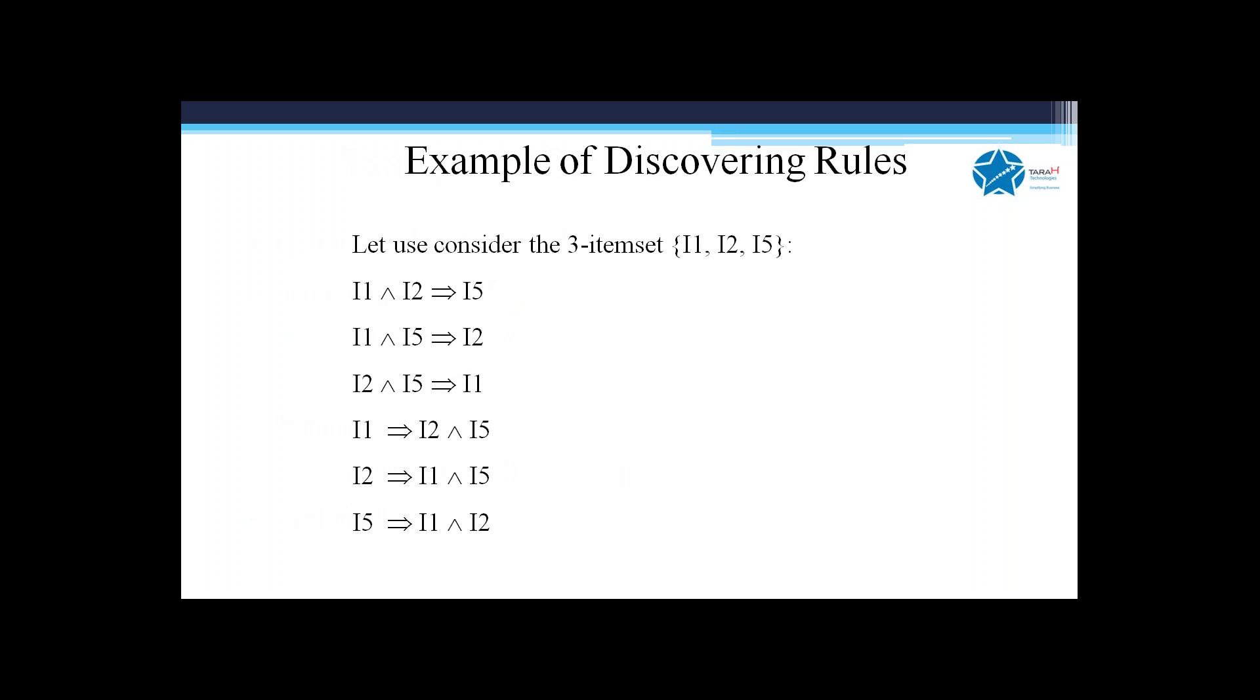But what are the rules which govern this? When you discover the set of frequent itemsets, each frequent itemset can have multiple rules. Multiple rules could be different combinations. Suppose you have three items like i1, i2, i5 - you can have different rules: i1 and i2 implies i5, i1 implies i2 and i5, i2 implies i1 and i5, i5 implies i1 and i2. So these are different combinations.